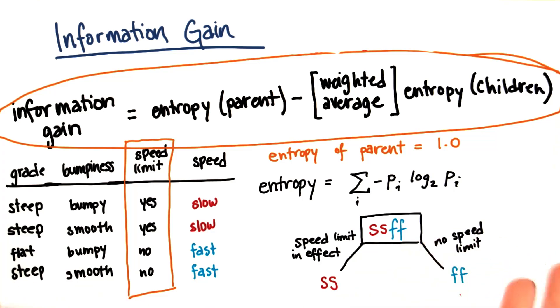So it's calculations like this that the decision tree is figuring out when it does the training. It looks at all of the training examples, all of the different features that are available to it, and it uses this information gain criterion in deciding which variables to split on and how to make the splits.